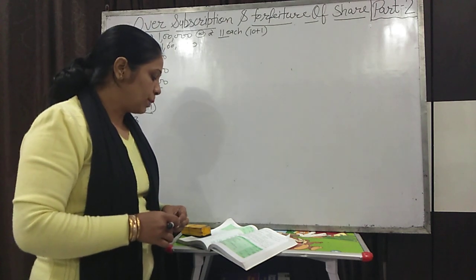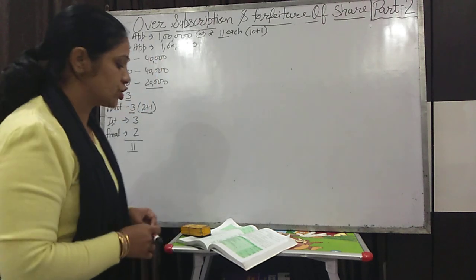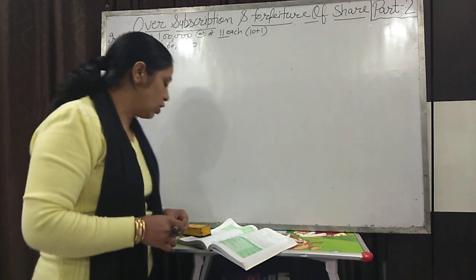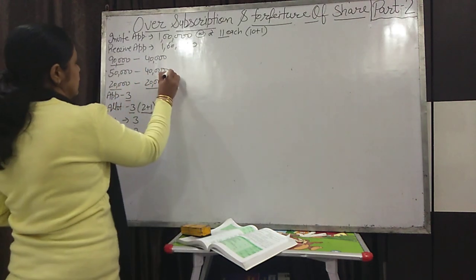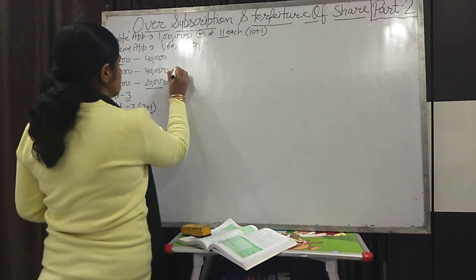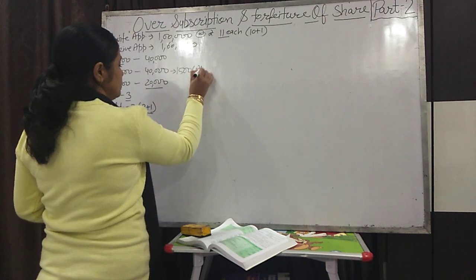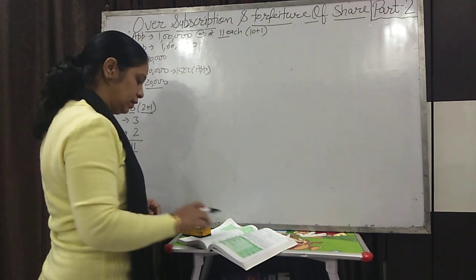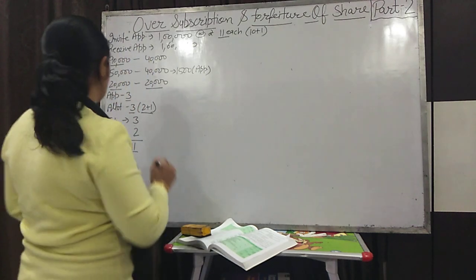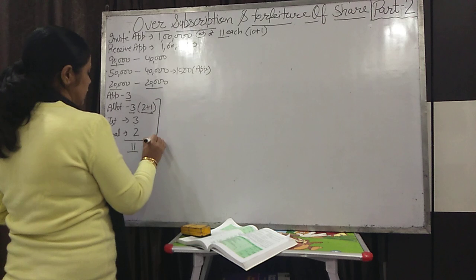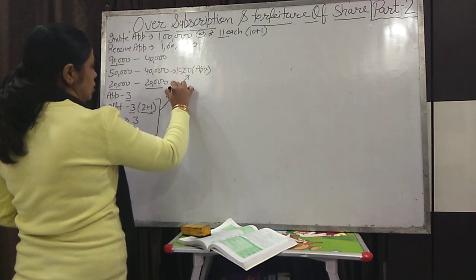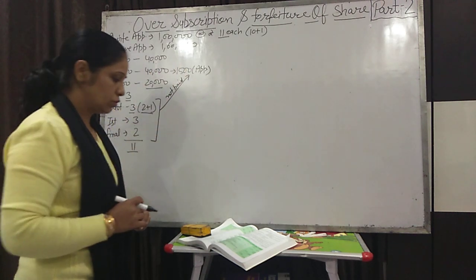A shareholder named Risha applied for 1,500 shares and belongs to the second category. She did not pay the allotment, first call, and final call money.